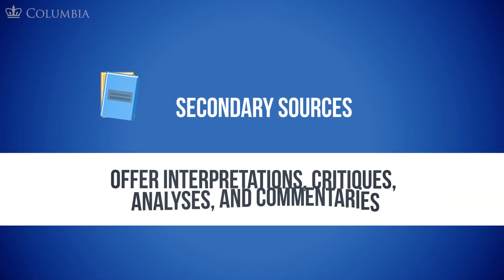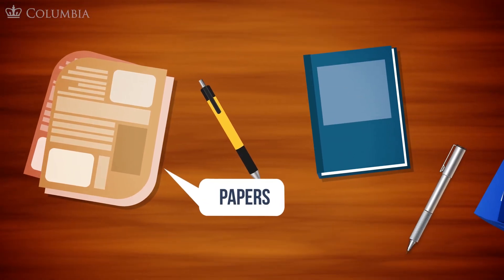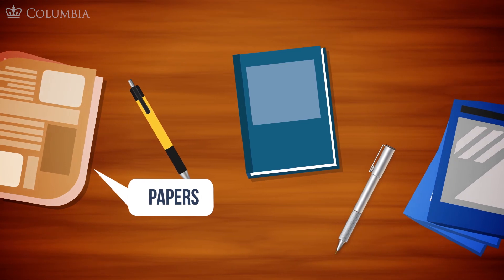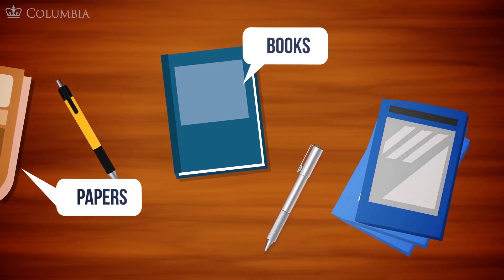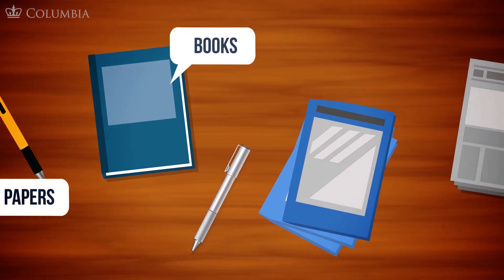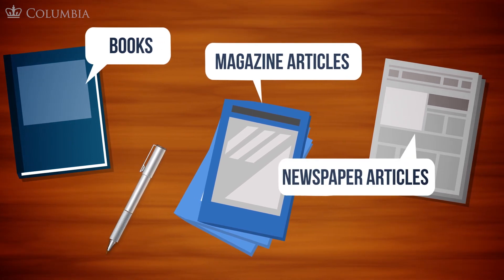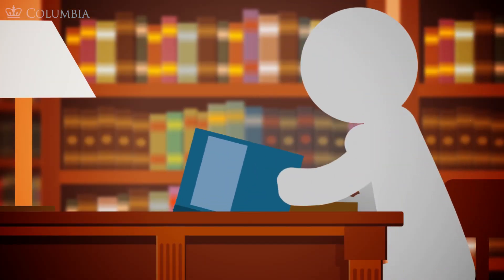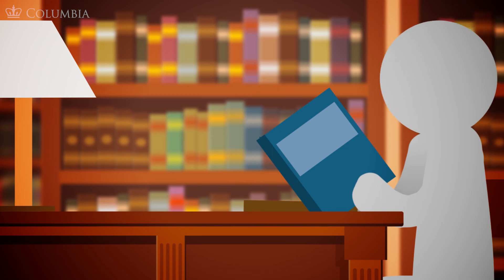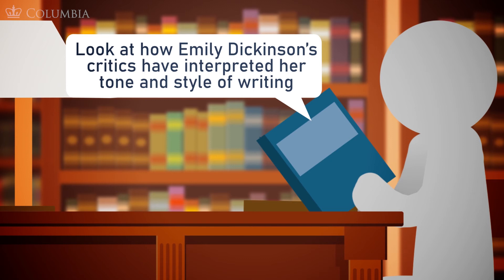Secondary sources offer interpretations, critiques, analysis, and commentaries. These can include papers that discuss the results of other articles with original research data, books that offer an in-depth examination of a topic or field, magazine articles that critique an artwork, or newspaper articles that analyze or discuss events or ideas. Secondary sources expand your awareness of the various perspectives on a specific topic. For example, you could look at how Emily Dickinson's critics have interpreted her tone and style of writing.